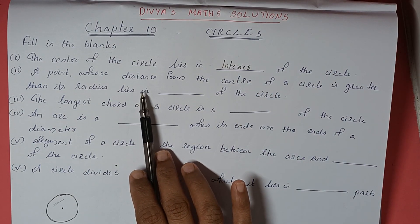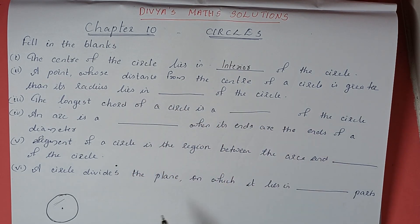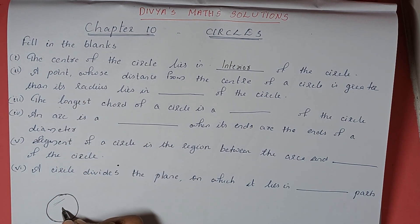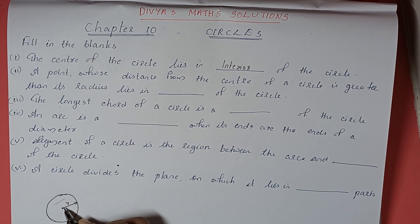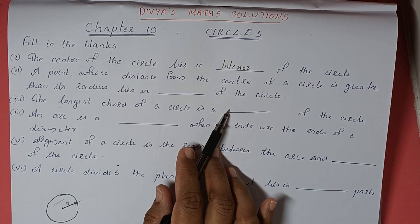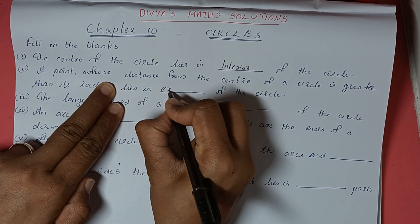Next: a point whose distance from the center of the circle is greater than its radius lies in dash of the circle. So one point is there whose distance from the center is greater than its radius — meaning it will go outside. So that point lies in the exterior of the circle.